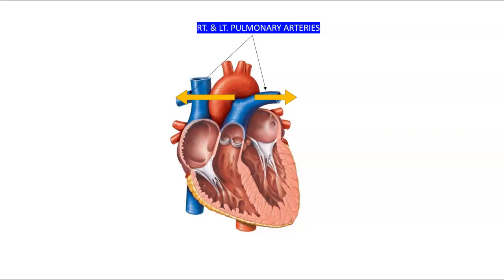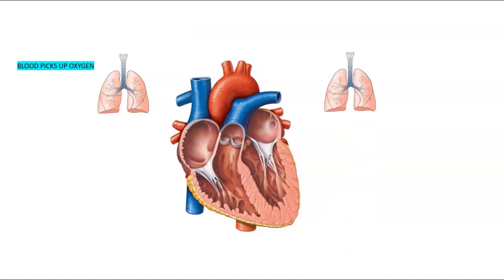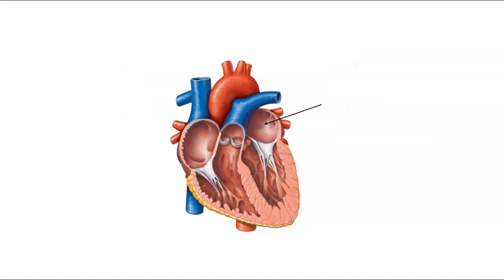Once the pulmonary arteries split, they go into the lungs to pick up oxygen. And once we pick up oxygen, blood leaves the lungs and goes back into the heart via the pulmonary veins. The pulmonary veins are now oxygenated and are located at the left atrium.